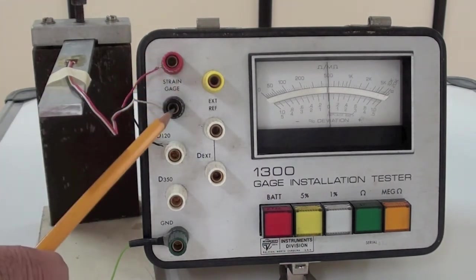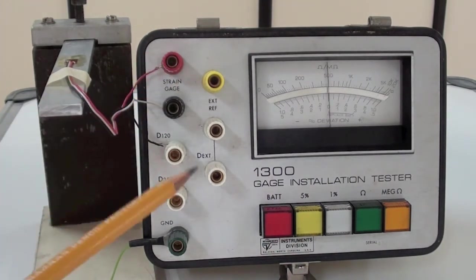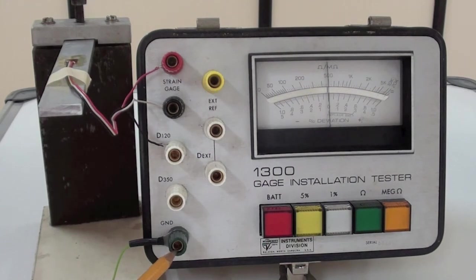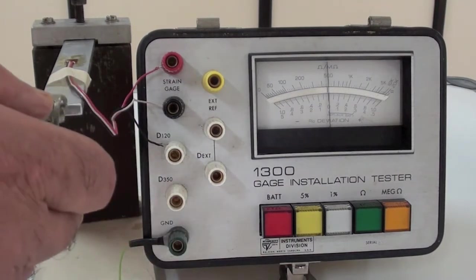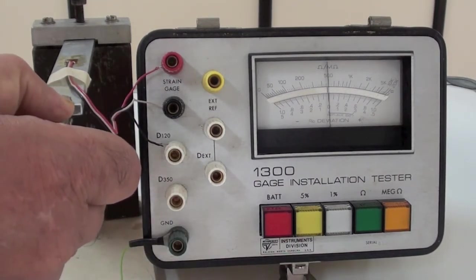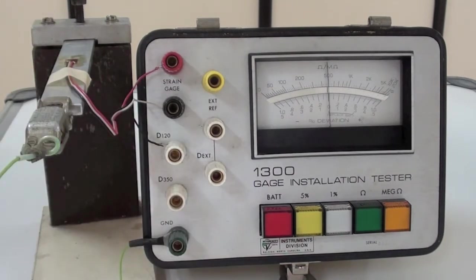It has a set of terminals to connect to the gauge and a ground terminal that can be attached to the body of the component with a spring clip. With this additional connection, the 1300 measures the insulation resistance between the gauge and the component.